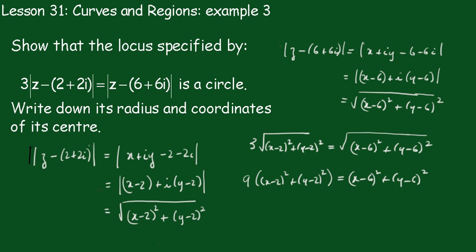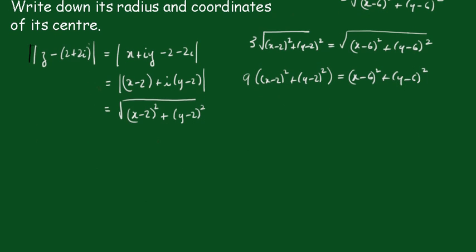Now I'm going to take this inside that bracket, so that will become 3x minus 6 all squared plus 3y minus 6 all squared equals x minus 6 all squared plus y minus 6 all squared. You can expand all this out, but it's a slightly different technique.